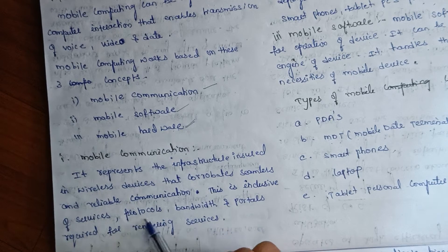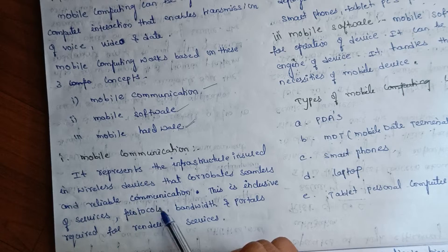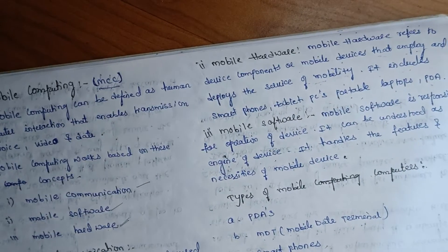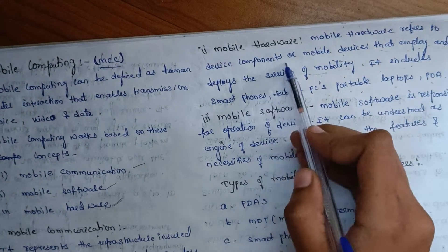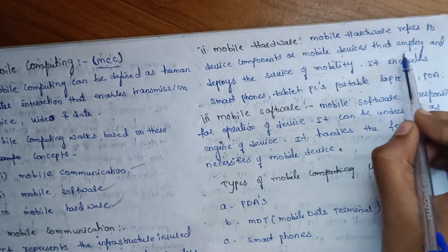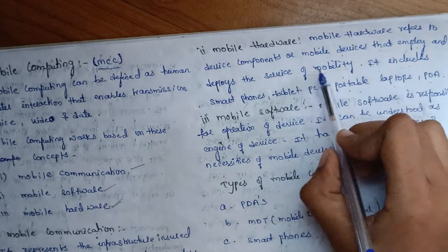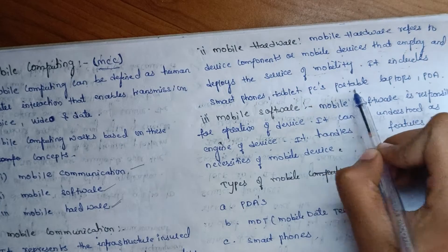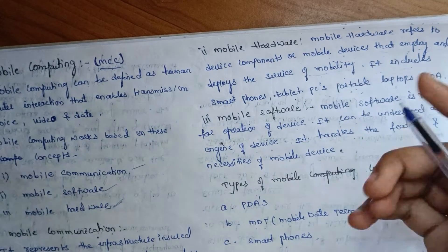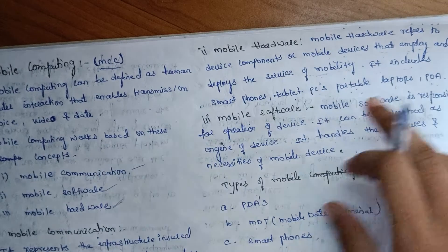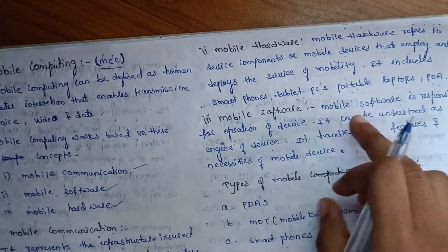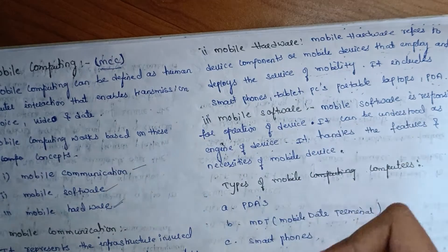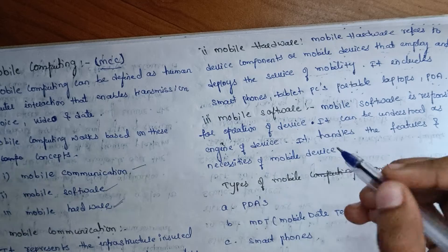Mobile hardware includes device components that employ and deploy the services of mobility. It includes smartphones, tablets, PCs, portable devices, laptops, and pads.